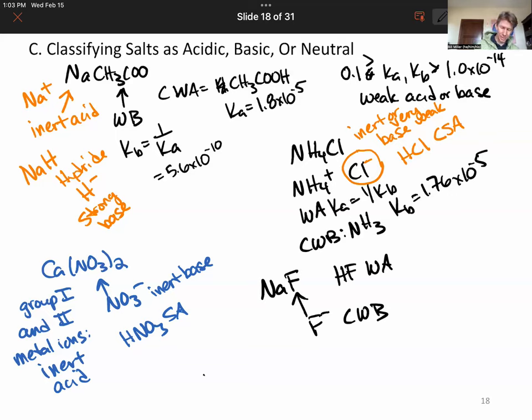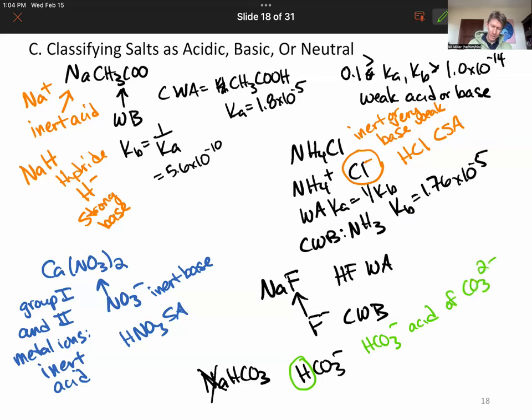It does get more complicated for something like sodium bicarbonate. First, we ignore the sodium because it's inert. Now we have the carbonate. HCO3 minus has an H, which means that HCO3 minus is an acid. It's also the conjugate acid of CO3 2 minus, so it has a Ka value. HCO3 minus is also a base of carbonic acid, so this has a Kb value as well. Carbonate has a Ka and a Kb value.